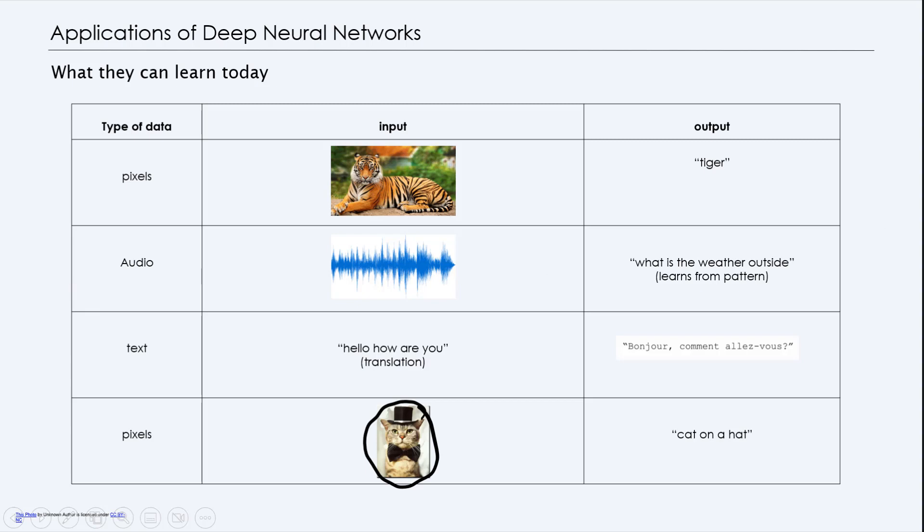The other type of data that we can understand using deep neural networks today is audio. So audio is a waveform, and we can understand that if you're given a waveform, can you predict what that audio would be? For example, you can learn from the patterns of the audio to predict what the output is, what's the weather outside.